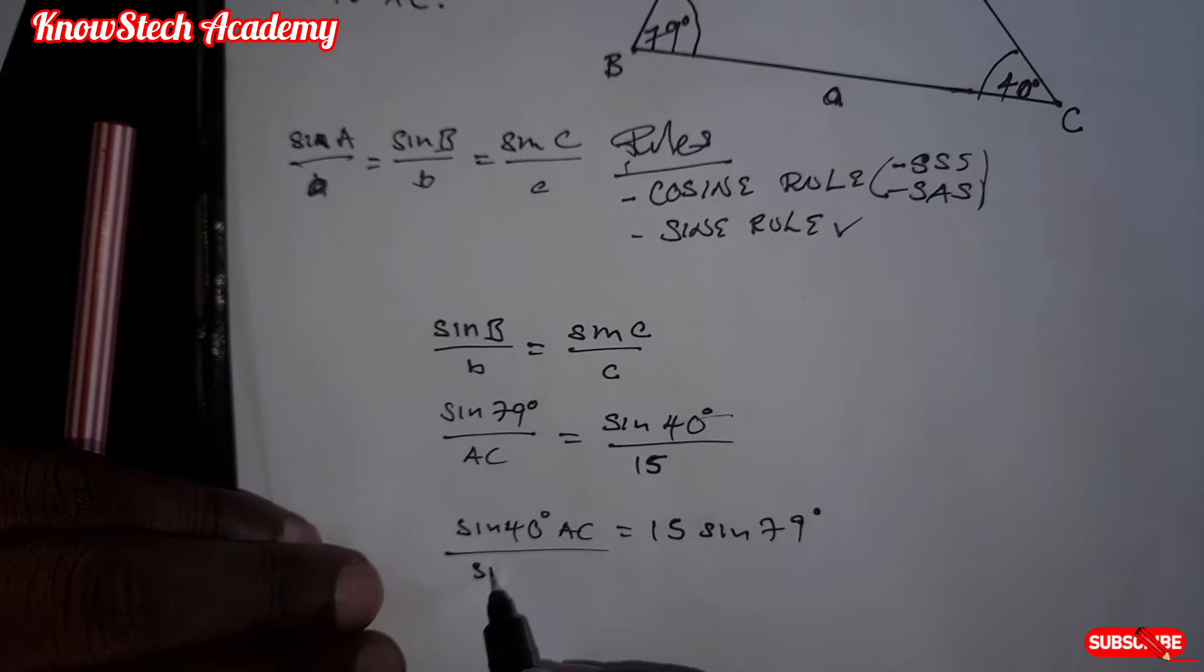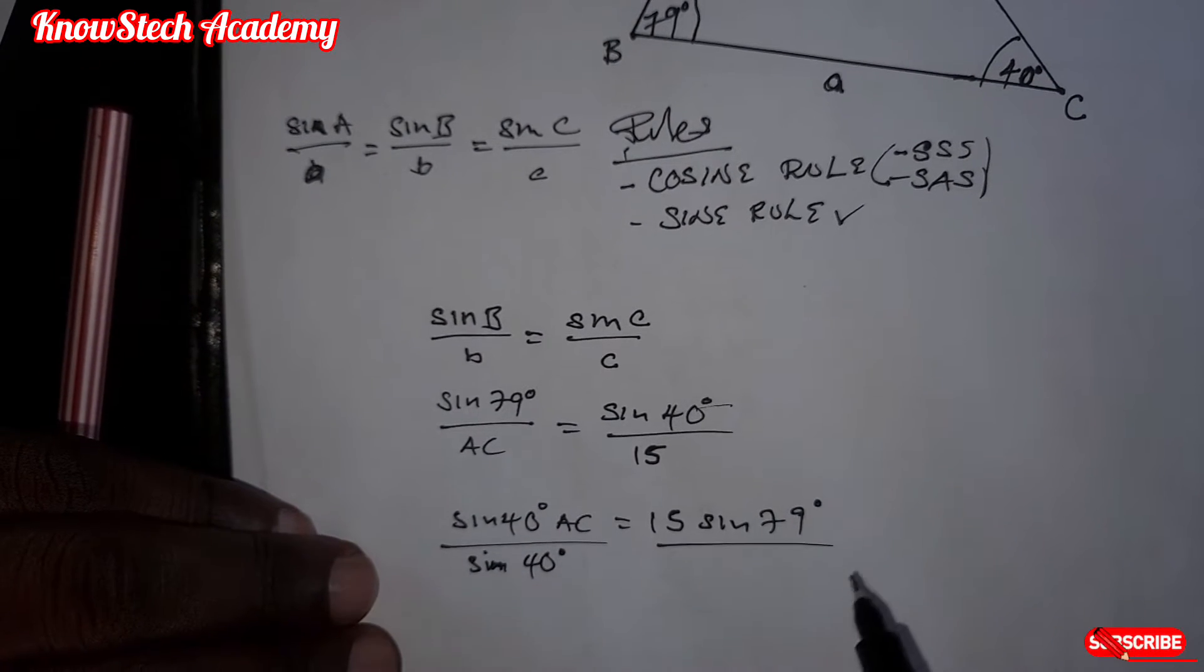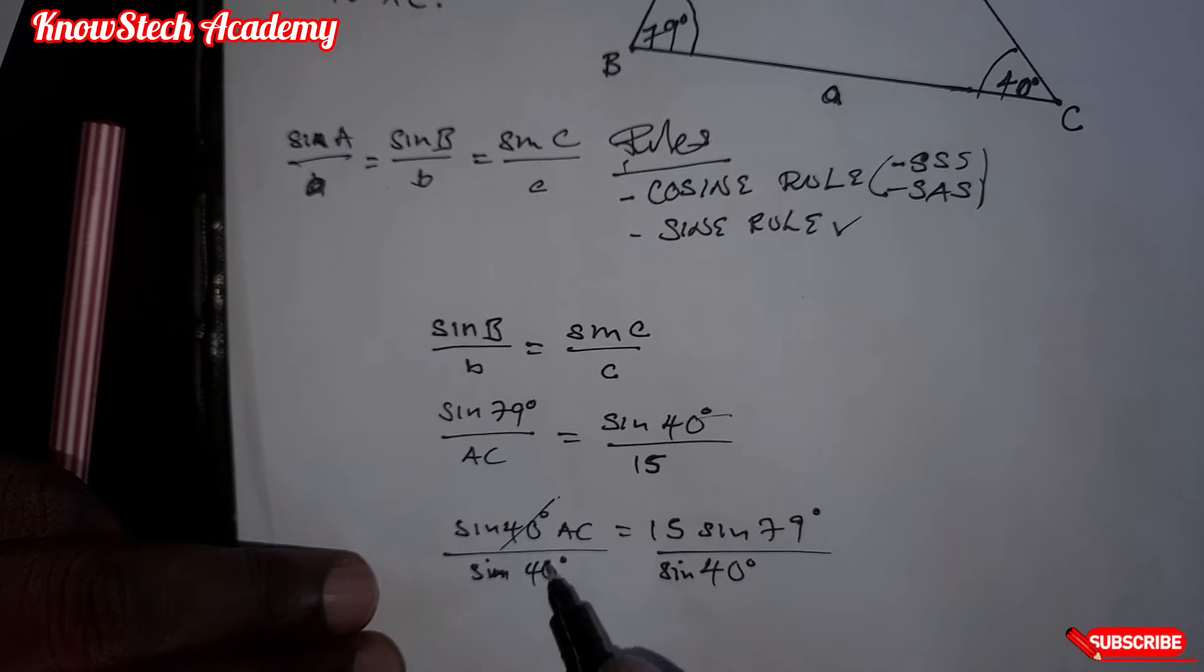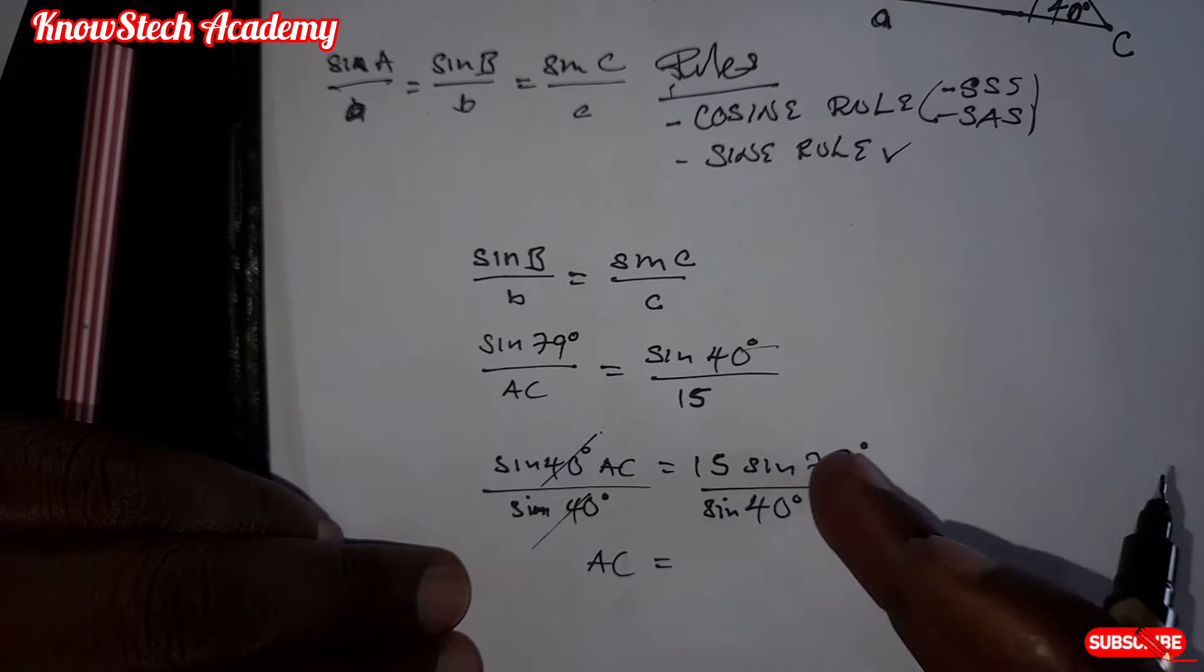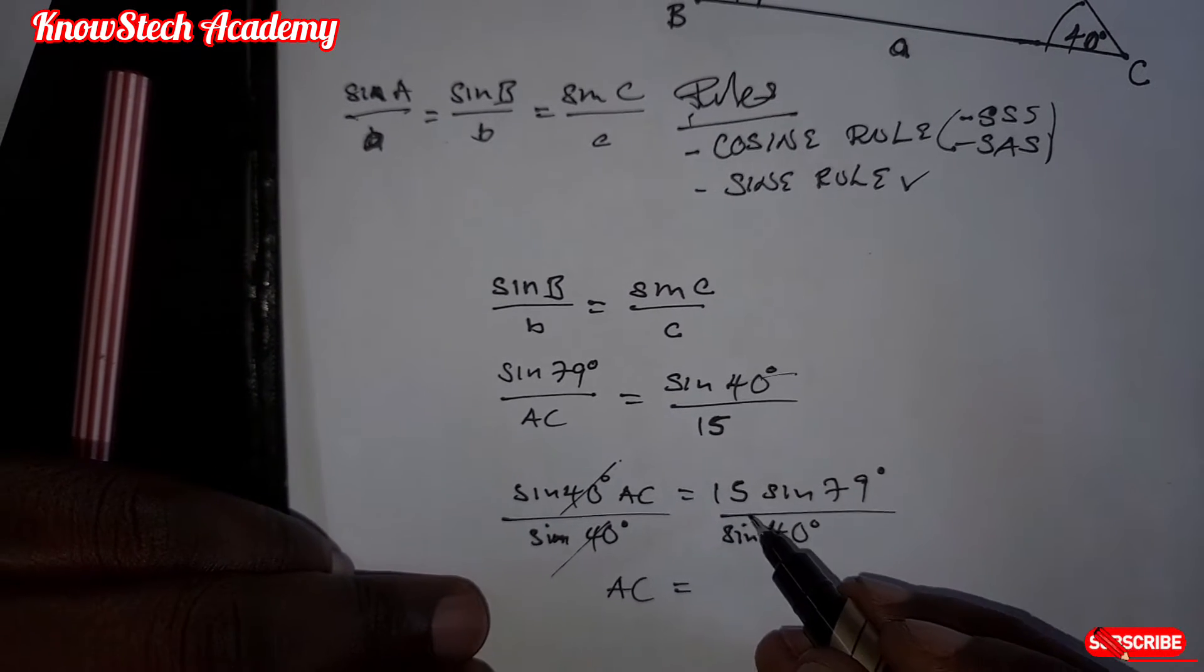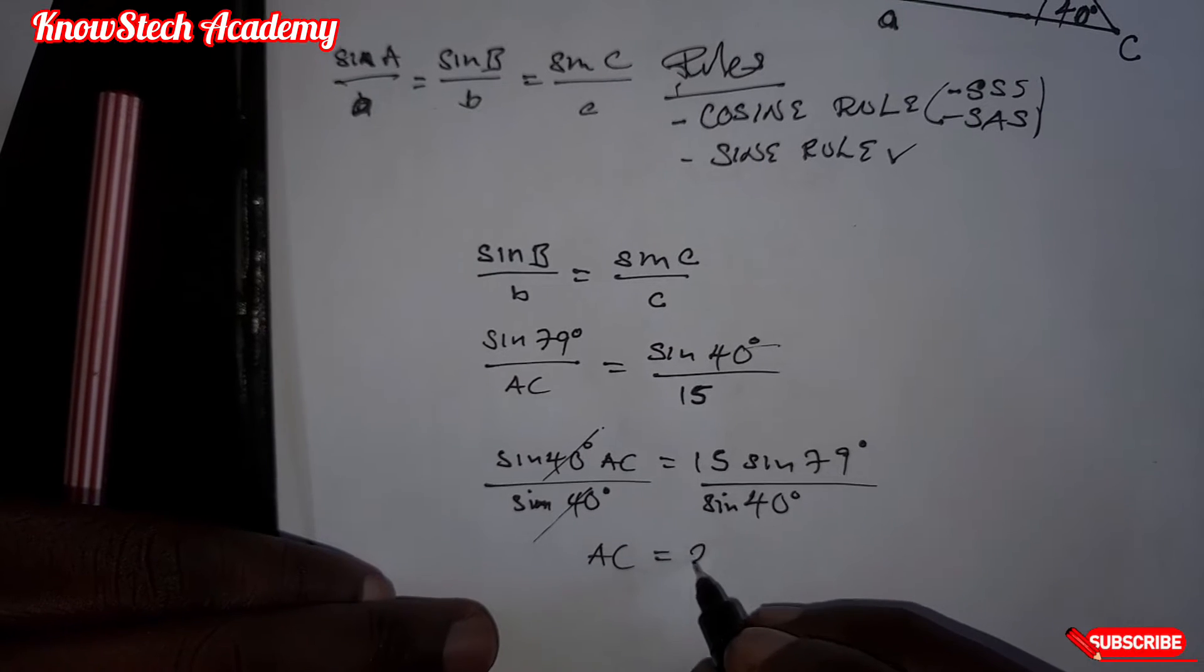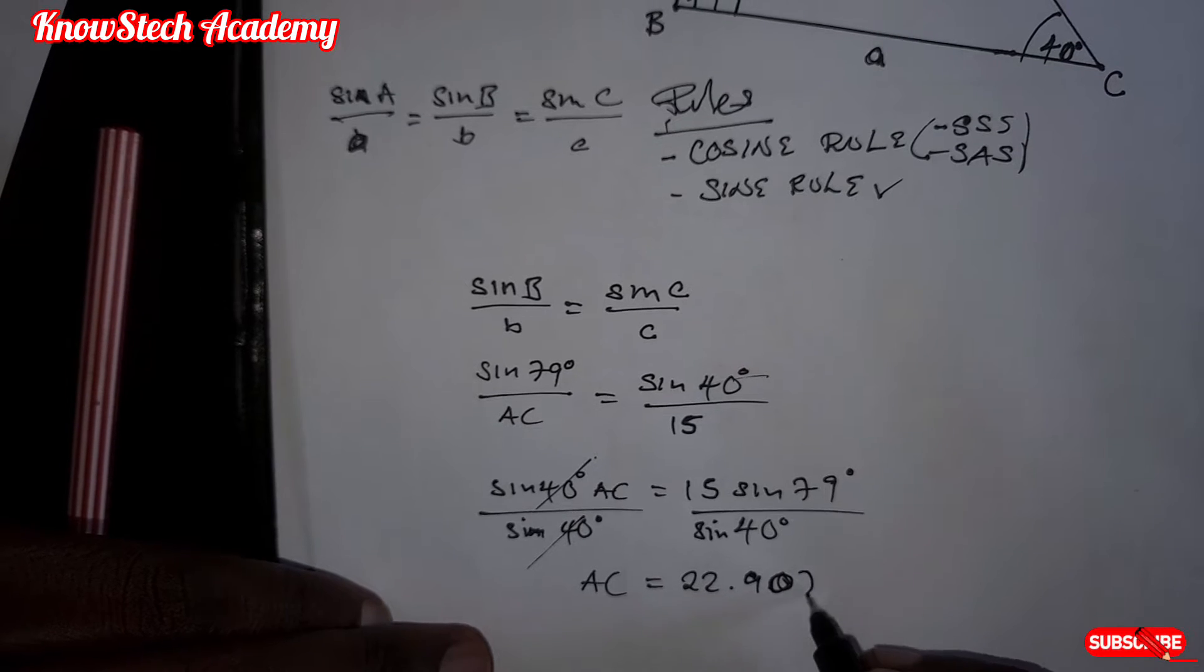When you cross multiply, it will be sine 40 AC is equal to 15 sine 79 degrees. So divide by sine 40. This sine 40 and this sine 40 will cancel, and you remain with AC is equal to 15 sine 79 degrees divided by sine 40.